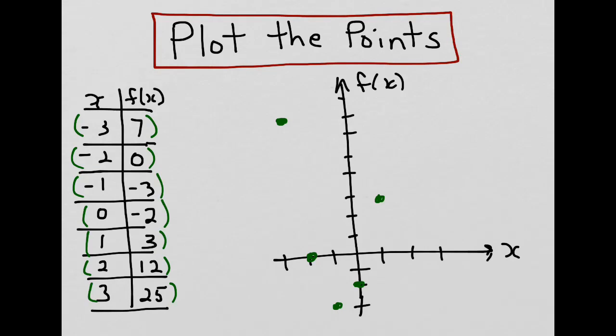So, what we end up with is a sketch of the curve of our function. And our function f of x equals 2x squared plus 3x minus 2.